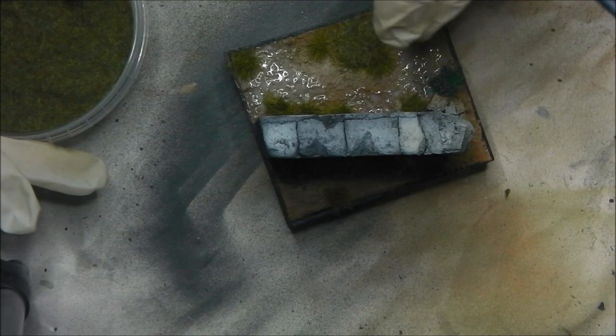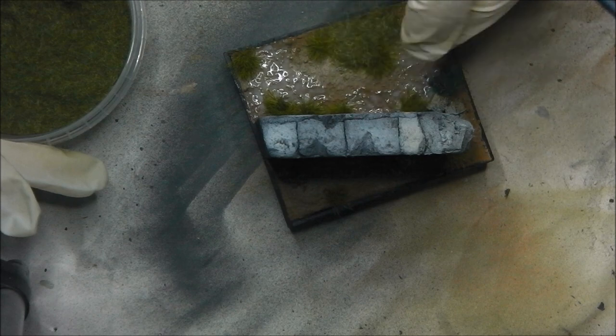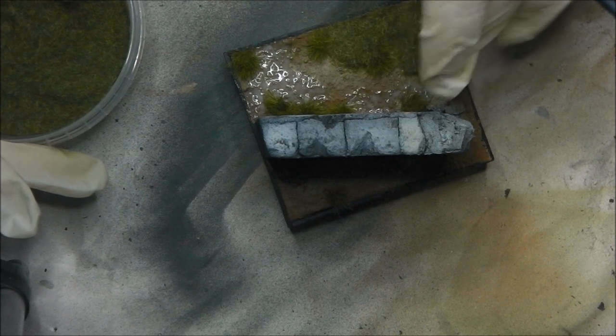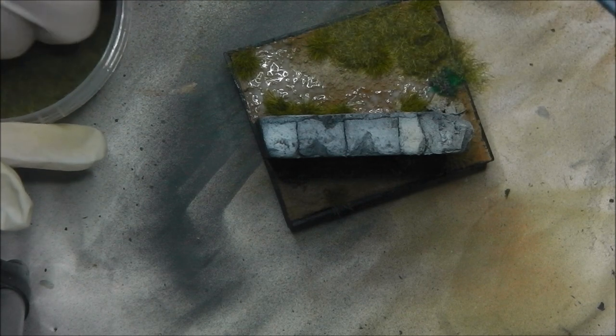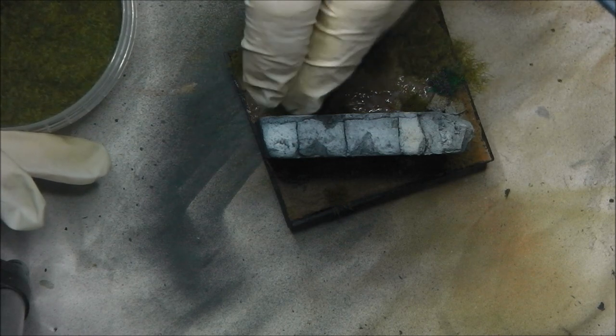With the PVA glue down I'm going to start applying the static grass. In this case I'm using autumn grass and I'm applying it pretty thickly. I want to ensure that I get a pretty strong coat or heavy coat.